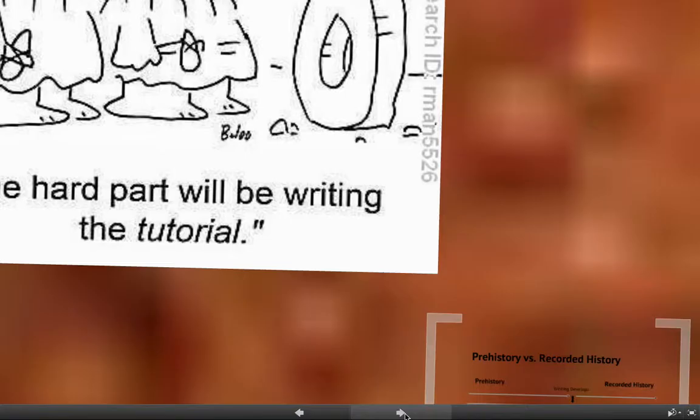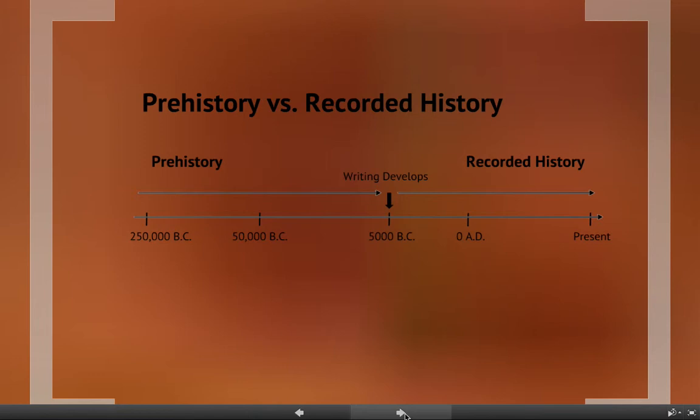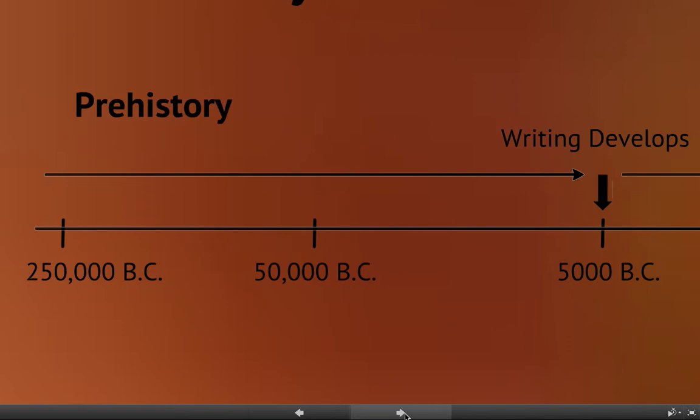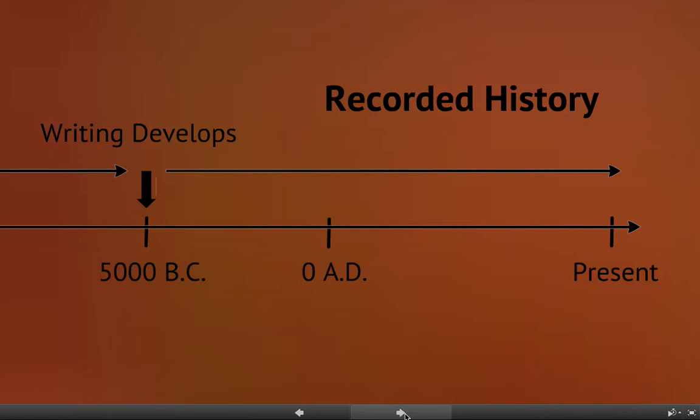Humans had existed for thousands of years before this — literally tens of thousands of years before anybody had started writing things down. This period in time is known as prehistory. Prehistory is everything before humans were able to write. So in order to study prehistory, historians cannot read anything; everything we know comes from looking at things we have found, not from writing. Looking at the timeline here showing prehistory versus recorded history: writing develops roughly around 5,000 BC depending on the culture. Everything before that is called prehistory; everything after writing develops is referred to as recorded history.